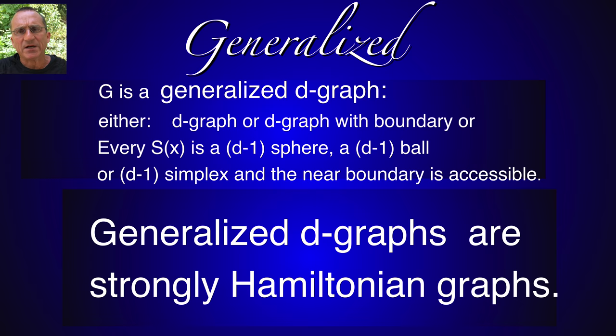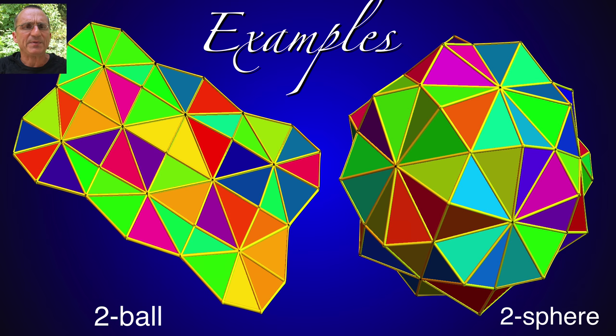The proof is constructive and shows that the construction of Hamiltonian cycles is easy on this class of graphs. The result is a bit more general. One can extend it to generalized d-graphs, graphs which also allow simplices as unit spheres and where the near boundary is assumed to be accessible.